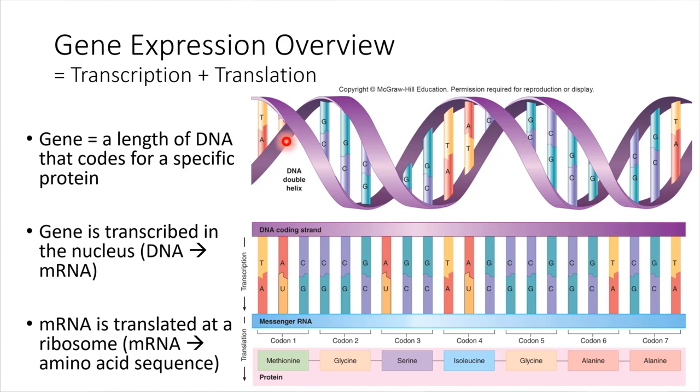So DNA, remember, is double-stranded, so we've got base pairing going on between nucleotides. And when a gene is transcribed, what happens is the helix is separated, so the two strands come apart from each other, and one strand is used as a template. That's called the coding strand. This is the one that is encoding whatever protein we're going to end up making.